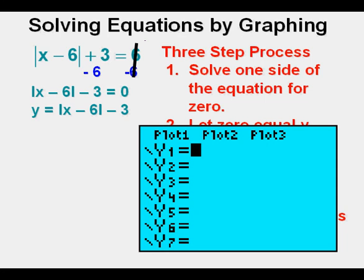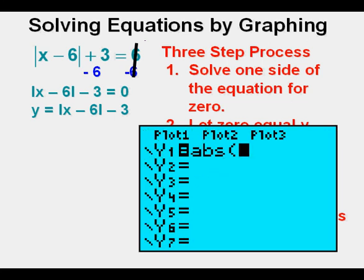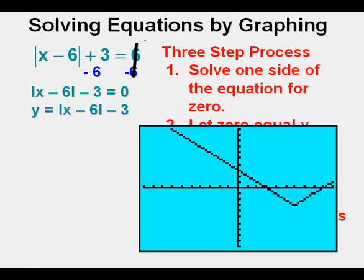Next we go to step 2 and get y equals the absolute value of quantity x minus 6 minus 3. Now we go to step 3, graphing and finding the solution or solutions. We first go to the y equals view in the calculator. We access the absolute value symbol by pressing second, then the zero key for catalog. With the abs selected at the top for absolute value on the catalog, we press enter. Next we complete the function by entering x minus 6, then closing parenthesis, then subtracting 3. Now we graph the equation.